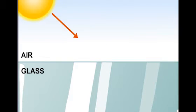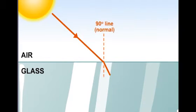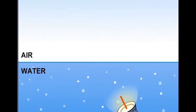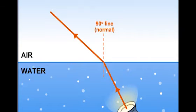When light travels from air into glass, its speed decreases. When light travels from water into air, its speed increases.